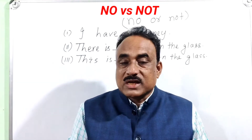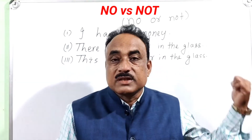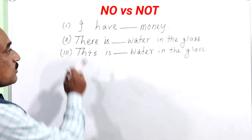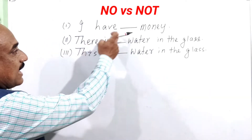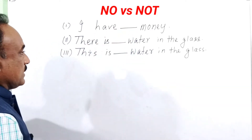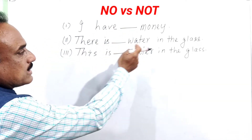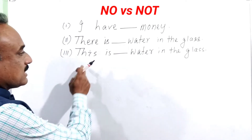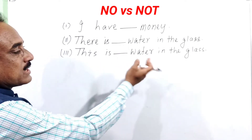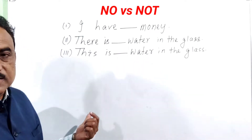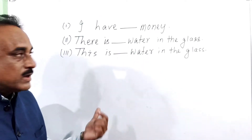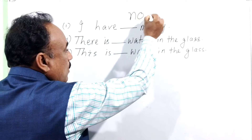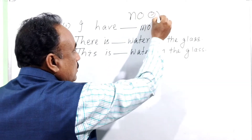Before going to discuss, we have to complete three questions. The first question is: I have dash money. Then, there is dash water in the glass. Then, this is dash water in the glass. Use 'no' or 'not'.